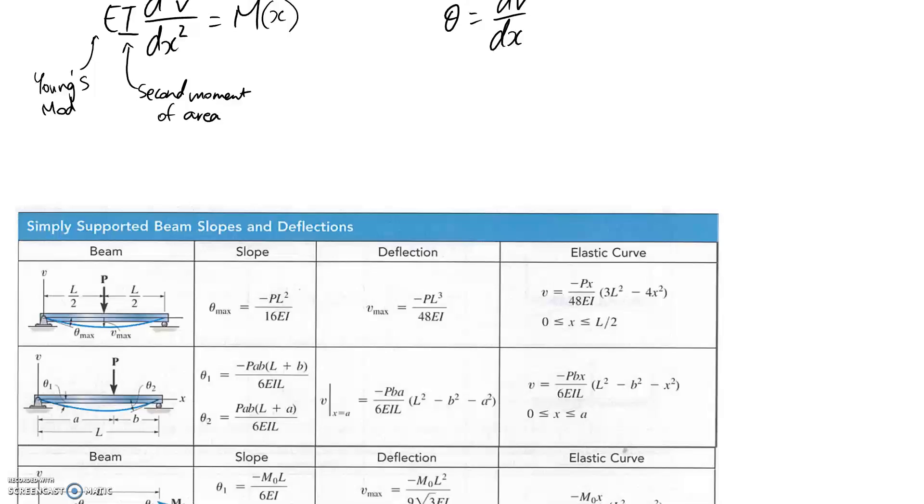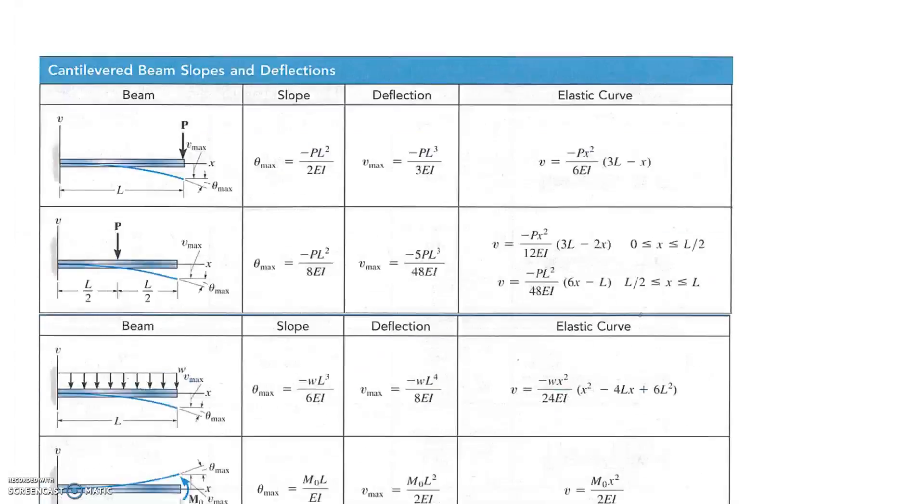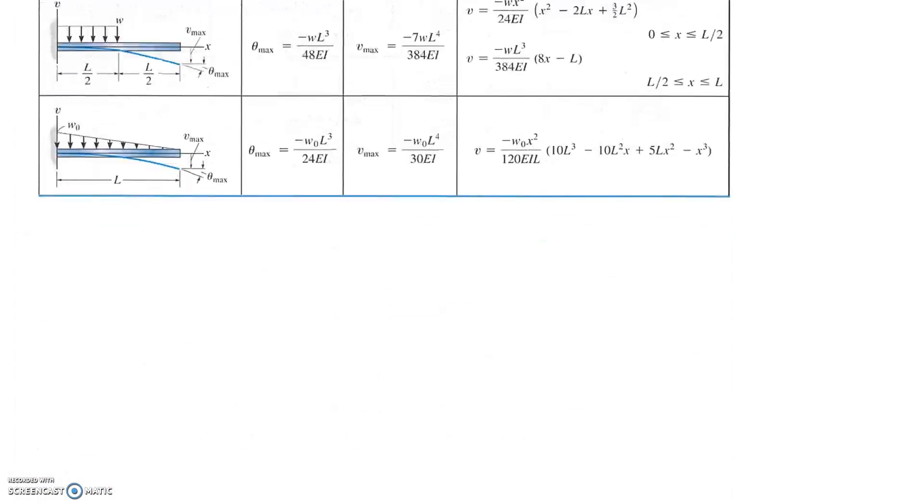Last thing is that you can apply superposition, and all that means is if you have multiple general cases, you can add them together. Let's pretend that we have a simply supported beam with a distributed load on top and also, at the same time, a point load down the middle. We'll call this one P, we'll call this one W.